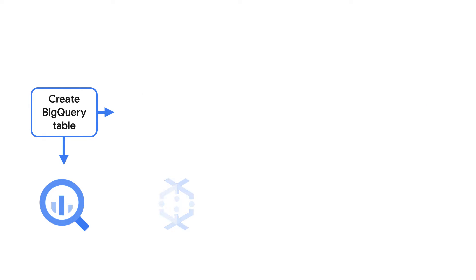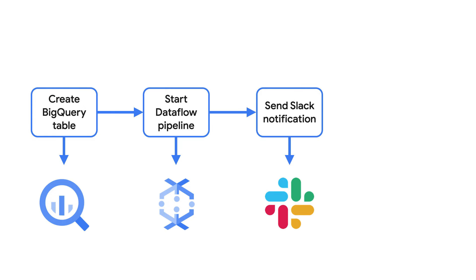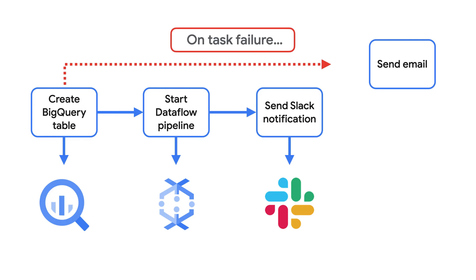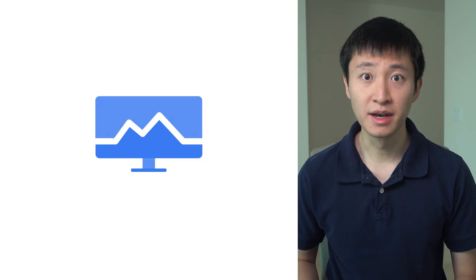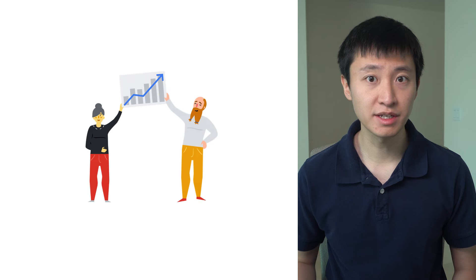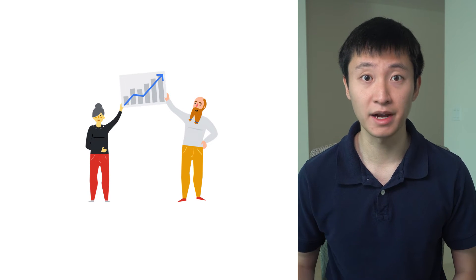Second, Composer has sophisticated task management. You can parallelize and branch tasks and define how you want to handle failure. For example, you could send out an email to the team if something goes wrong along the way. And third, keeping track of your workflows is straightforward with Composer's built-in monitoring. All of this is important as your workflows scale and become more complex.